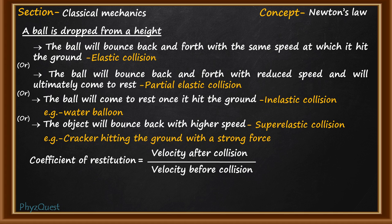How do we relate this formula with height? According to Newton's law of motion, we have the equation v² − u² = 2as, where u is the initial velocity, v is the final velocity, a is the acceleration, and s is the distance. It is given that the ball is initially at rest and dropped from a height h, so the initial velocity u = 0, distance s = h, and acceleration a = g. Therefore, v² = 2gh, or v = √(2gh).